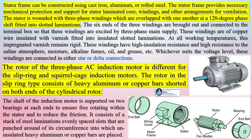The rotor of the three-phase AC induction motor differs between slip ring and squirrel cage types. In the squirrel cage type, the rotor consists of heavy aluminum or copper bars shorted on both ends of the cylindrical rotor. The shaft is supported on two bearings at each end to ensure free rotation and reduce friction. It consists of a stack of steel laminations with evenly spaced slots punched around the circumference, into which uninsulated heavy aluminum or copper bars are placed. A slip ring type rotor consists of three-phase windings that are internally star-connected at one end, with the other ends brought outside and connected to slip rings mounted on the rotor shaft.